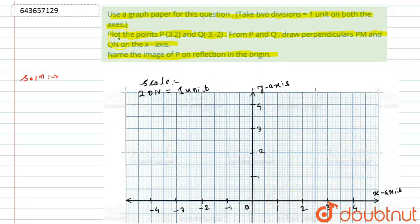Now the next thing we have to do is plot point P with the coordinates (3, 2) and Q with the coordinates (-3, -2). If I look here, point P will be onto the x-axis at 3 and onto the y-axis at 2. So it will be located here with the coordinates (3, 2).